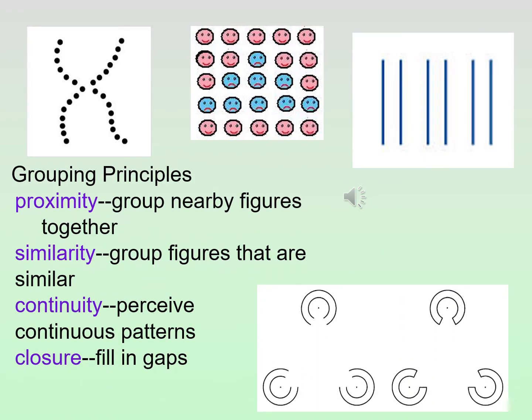A few gestalt or grouping principles: first, proximity. We tend to group figures that are nearby, close to one another. If you look at the lines, instead of seeing six distinct lines, you see three parallel lines because of their proximity. Similarity — we tend to group figures that are similar. If you look at the picture in the middle, we group the blue faces together because they're similar, and the pink faces separately because they are similar.